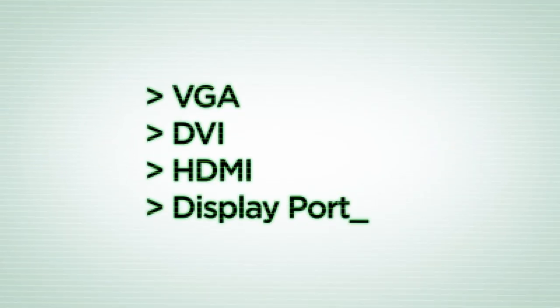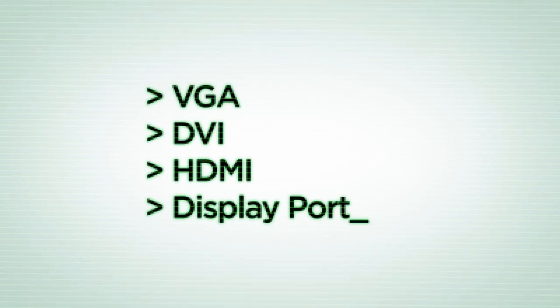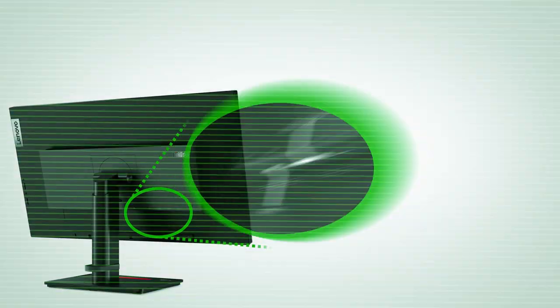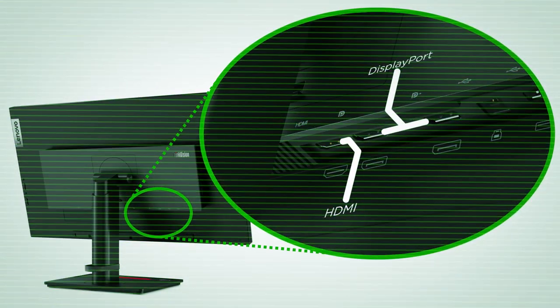VGA, DVI, HDMI, DisplayPort. These are interface protocols that transmit digital or analog video and audio signals from devices like your PC to an external monitor. Some systems may have options for more than one of these display connection types.